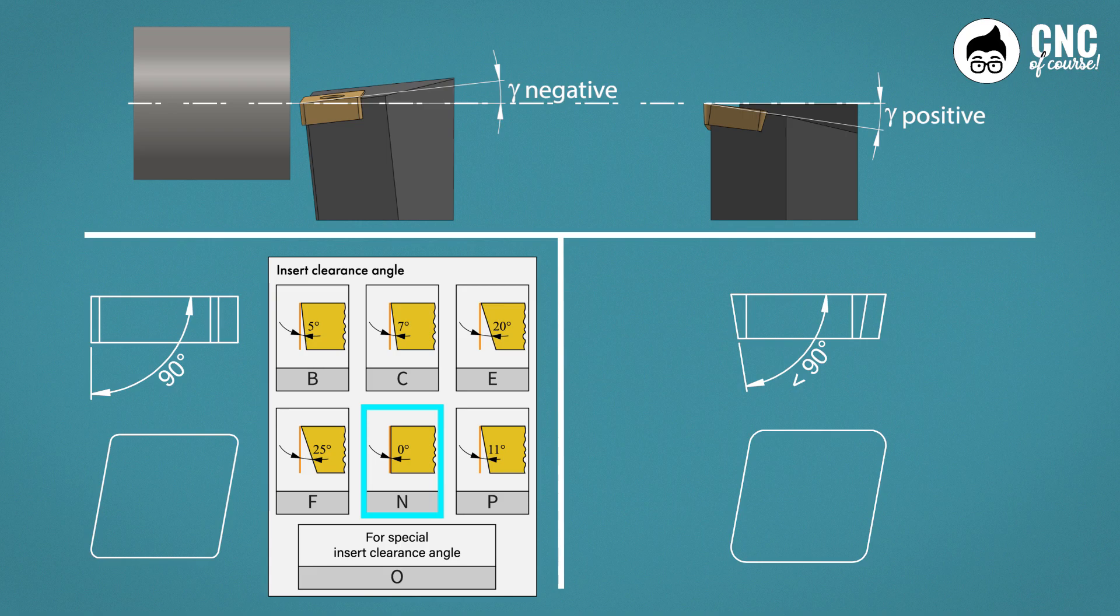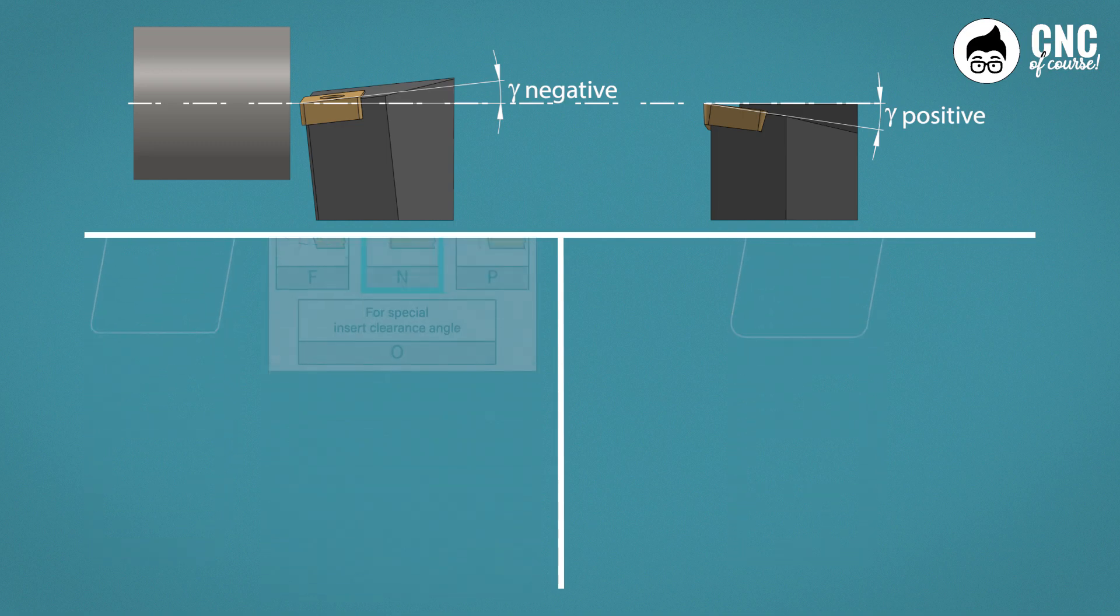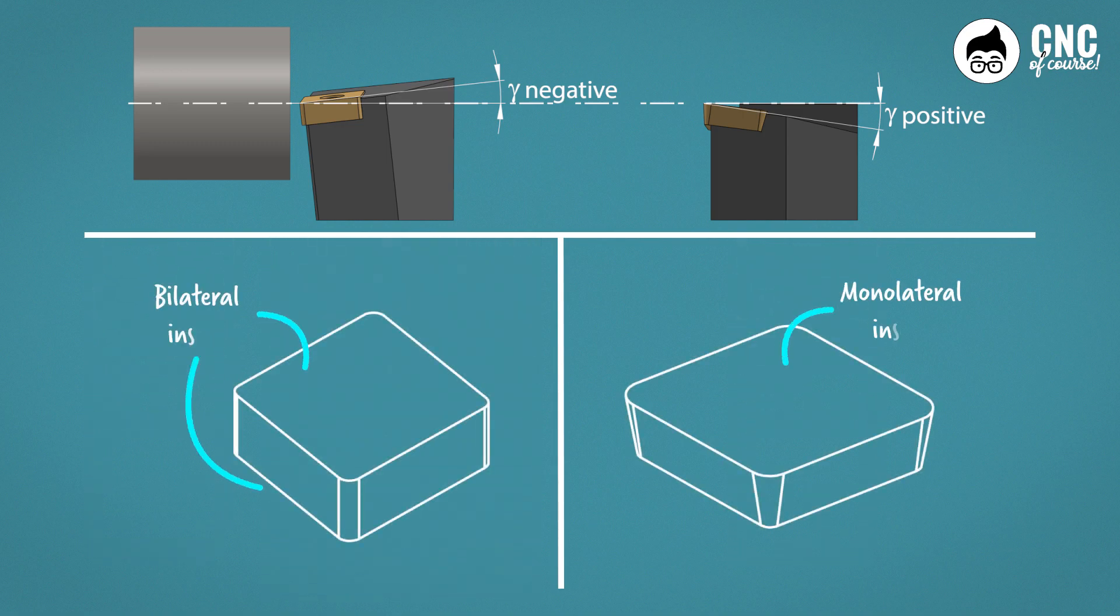The second reason why the negative tool is very popular is closely linked to the first reason. In fact, the negative tool, thanks to the fact that it has a clearance angle equal to zero degrees, allows the insert to be used on both faces, becoming double-sided, significantly lowering costs, because a negative insert with a slightly higher cost than the single-sided one provides twice as many cutting edges.